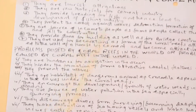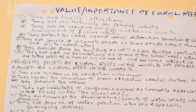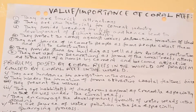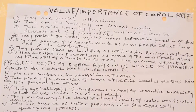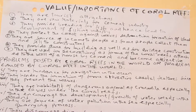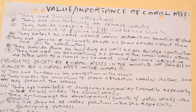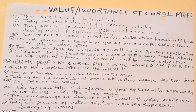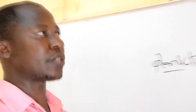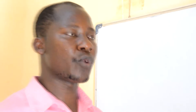Coral reefs provide breeding grounds for fish and hence lead to the development of the fishing industry. Along these coral reefs there are organisms such as plankton, which are consumed by creatures like fish within water bodies. Wherever this fish consumes this organism, it will be healthy and grow well, and can be taken to the industry for further breeding.